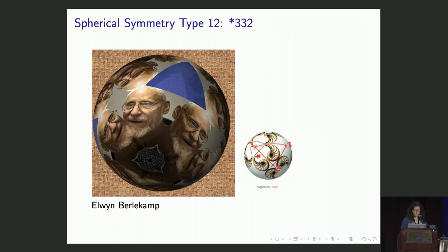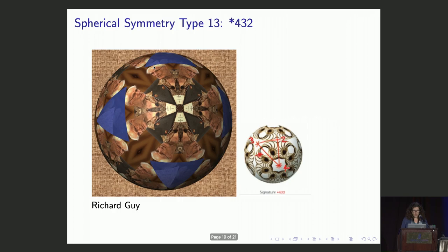With more mirrors, we get star 3-3-2 symmetry, portraying Elwin Berlekamp.